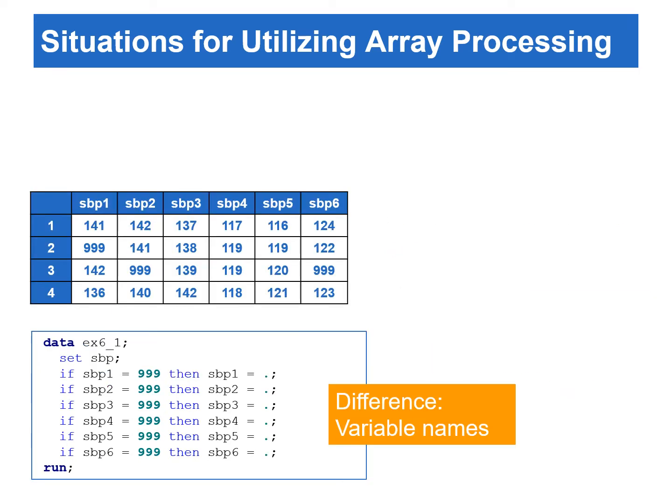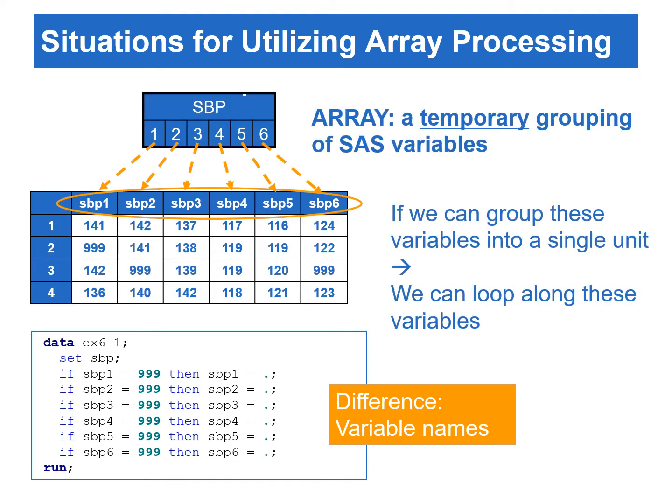In this program, the difference between these six statements is the variable names, instead of the values of a single variable. If these six variables can be grouped into one single unit, we can loop along with these variables. This is the concept of array processing in SAS.